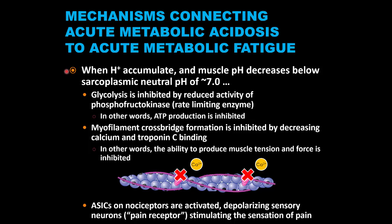The question now is how does proton accumulation and acute metabolic acidosis, as well as inorganic phosphate accumulation, cause acute muscular fatigue during post-anaerobic threshold hypoxic situations? In other words, how do they cause muscle inhibition? First, let's discuss proton accumulation and the resulting acute metabolic acidosis.